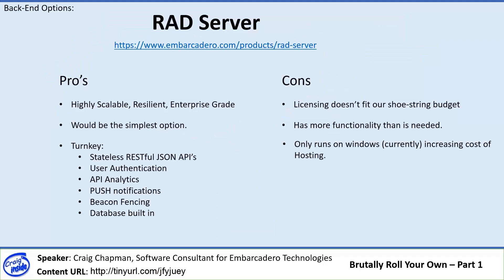The first alternative option is RAD Server, probably the most ideal product for this application. It already has RESTful API hosting built in, user authentication, push notifications, and a database, providing a lot of functionality out of the box. It's highly scalable, resilient, and enterprise-grade — certainly the simplest solution. On the negative side, the licensing doesn't fit our shoestring budget; it's targeted at larger enterprises. It has more functionality than we need — I have no use for beacon fencing, and while the API analytics would be interesting they're not necessary. The crushing point for us is that currently RAD Server only runs on Windows, and I want to run on virtual Linux servers or wherever we have access to PHP. But if you are building an enterprise-grade application, certainly consider upgrading to RAD Server.